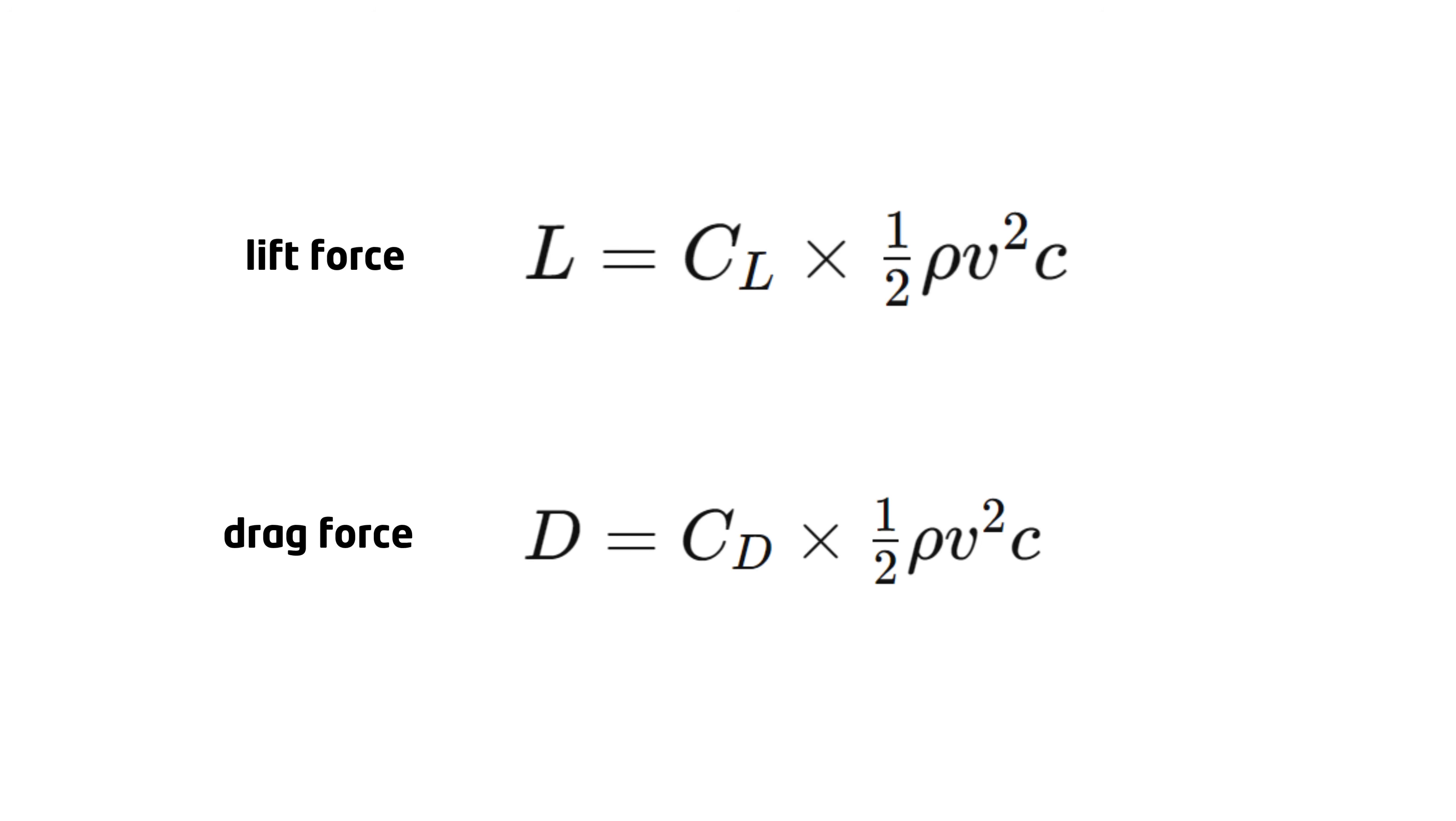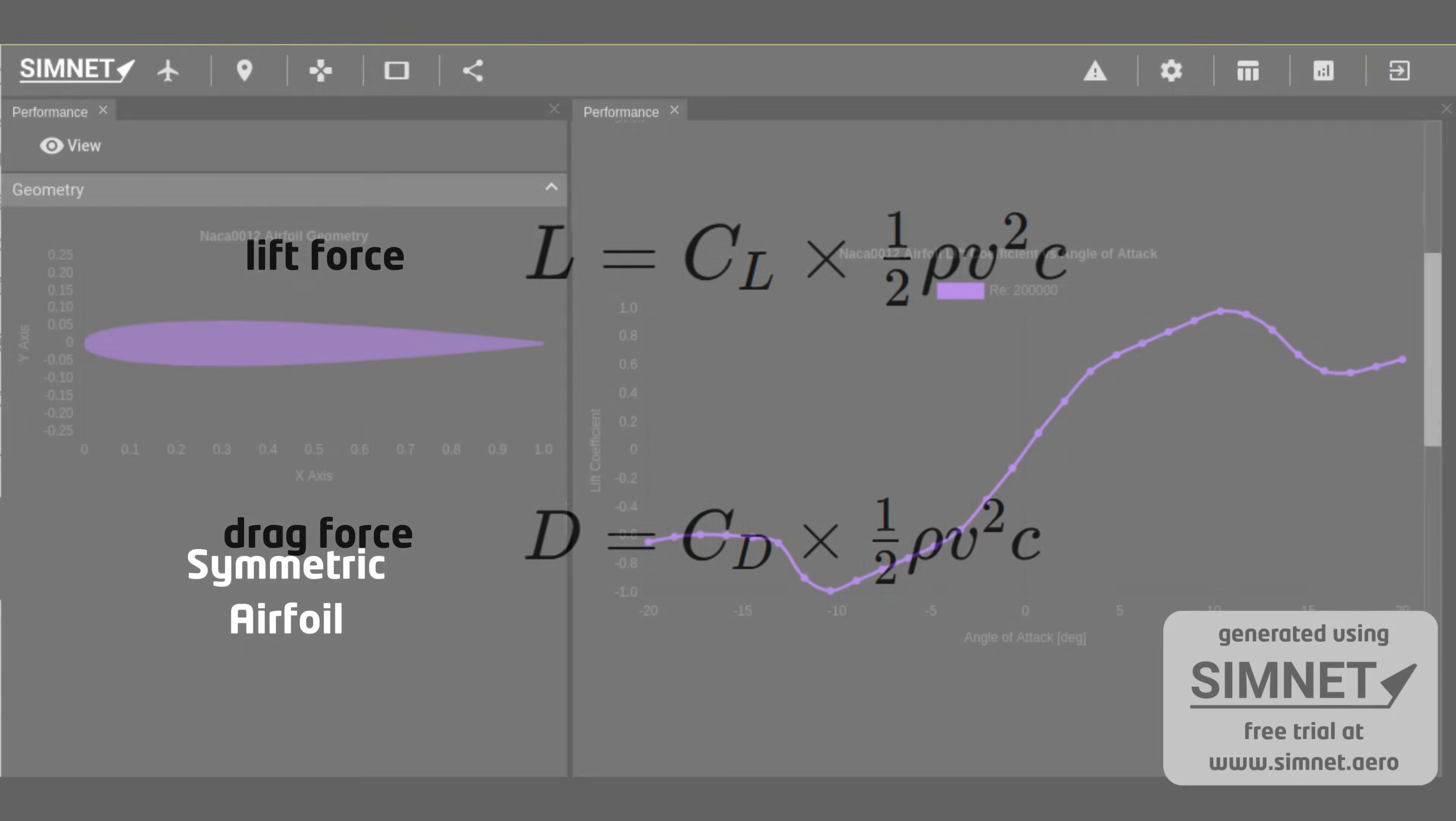Let's use SimNet to explore the lift and drag characteristics of typical airfoils. This is a typical plot for a symmetric airfoil's lift coefficient versus its angle of attack. Notice that increasing the angle of attack of the airfoil increases its lift. Also notice that since this airfoil is symmetric, it produces zero lift at zero angle of attack, and the lift curve is symmetric in negative and positive angles of attack.